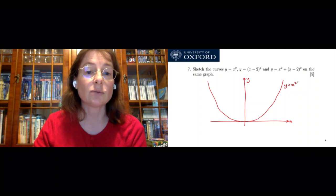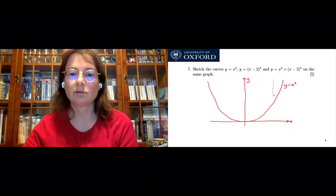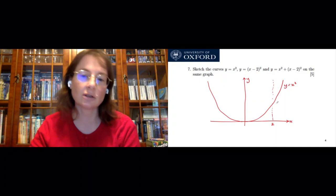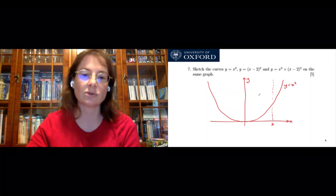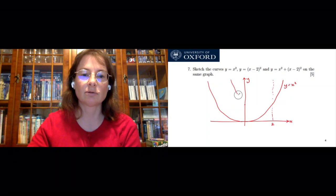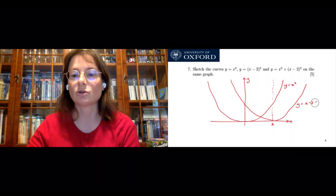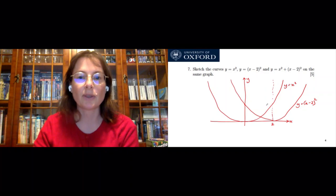Now suppose we want to sketch y equals x minus 2 all squared. If I put a vaguely vertical line at x equals 2, then x minus 2 all squared is the same graph as x squared, but shifted along so that it's now symmetric about the line x equals 2 rather than x equals 0. So it's basically the same parabola shape, just shifted across.